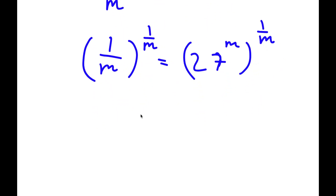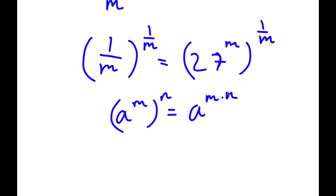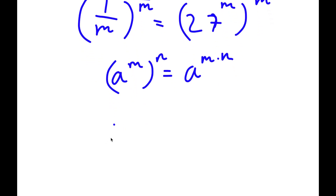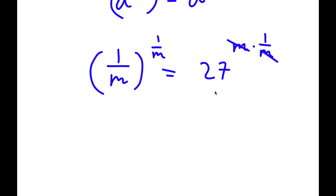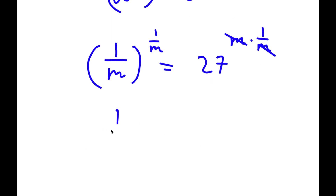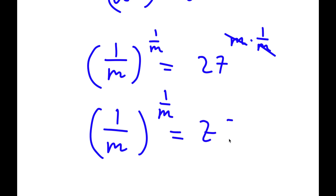If I have something in the form a to the power of m to the power of n, this is equal to a to the power of m times n. So 27 to the power of m to the power of 1 over m is the same thing as 27 to the power of m times 1 over m. And m times 1 over m, these two cancel out, so that's just going to be 27. So now I have 1 over m to the power of 1 over m is equal to 27.